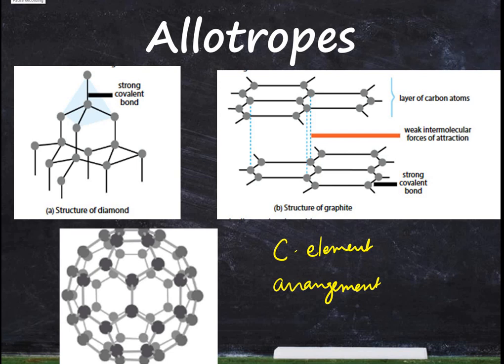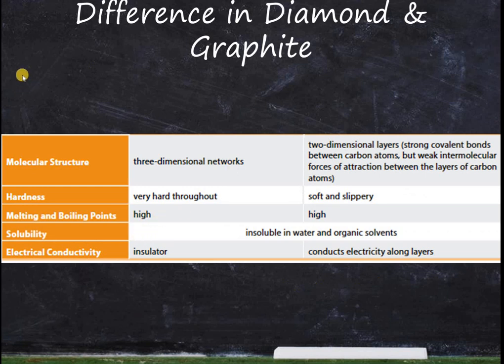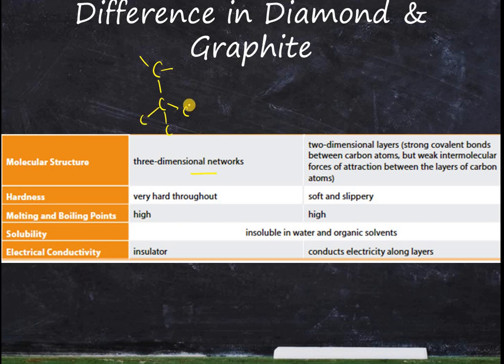They have different properties — for example, diamond is the toughest material known on Earth. Let's compare the properties of diamond and graphite. Looking at the 3D molecular structure, diamond has a 3-dimensional network where each carbon is surrounded by four carbon atoms in a tetrahedral structure. Graphite, on the other hand, has a two-dimensional layered structure.